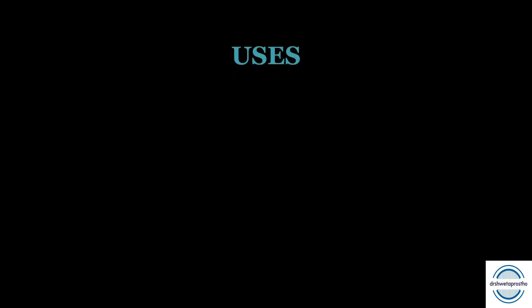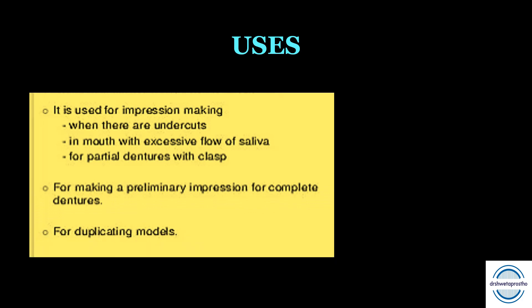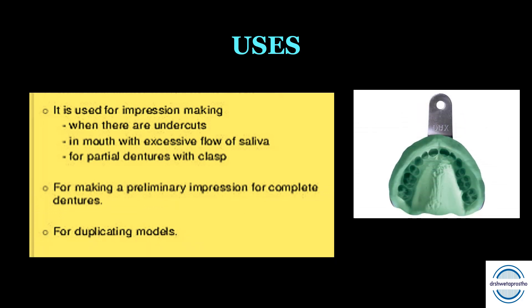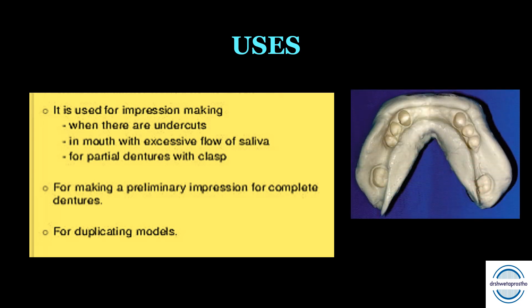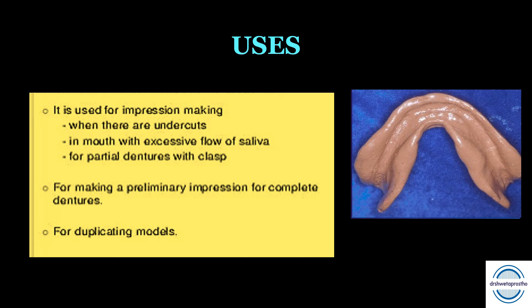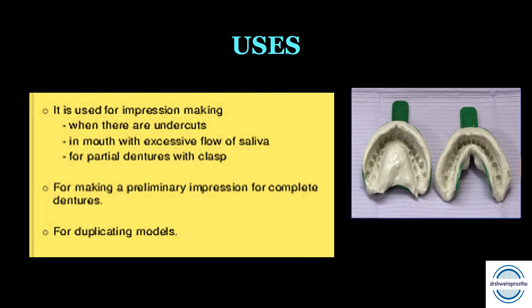Uses of alginate: it is the most common impression material used. It can be used when there are undercuts in the mouth or with excessive flow of saliva, as it is hydrophilic. It is used for partial dentures, making preliminary impressions for complete dentures, orthodontic study models, working casts, and for duplicating models.